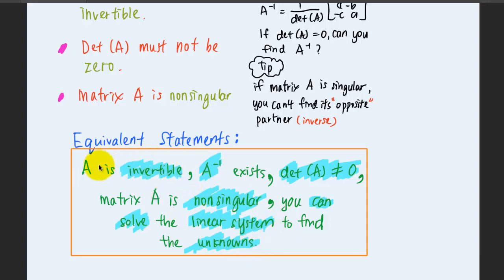If any of these statements, the invertibility, the existence, the determinant, or the singularity, is violated, either one, if the matrix A is non-invertible, or the inverse is not existing, or the determinant is zero, or matrix A is singular, then the linear system would not have any solutions.